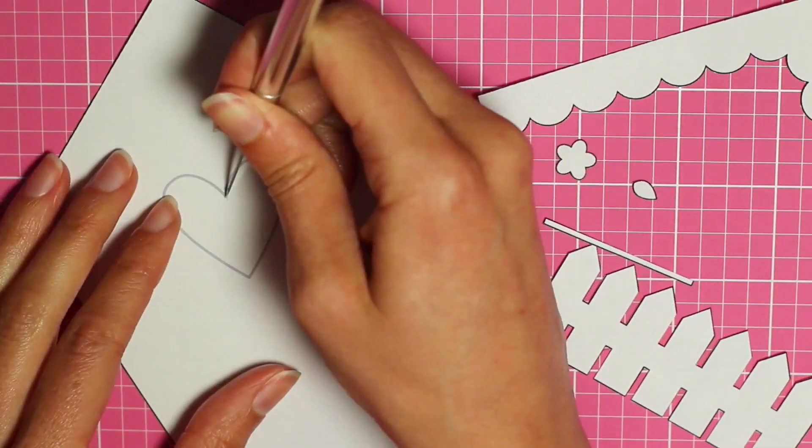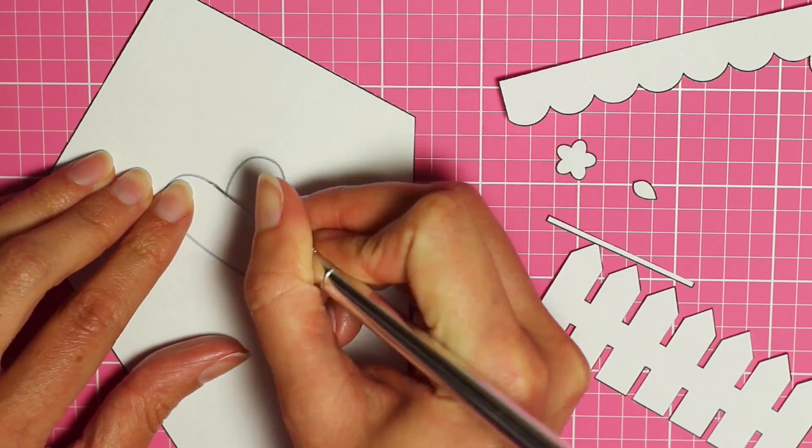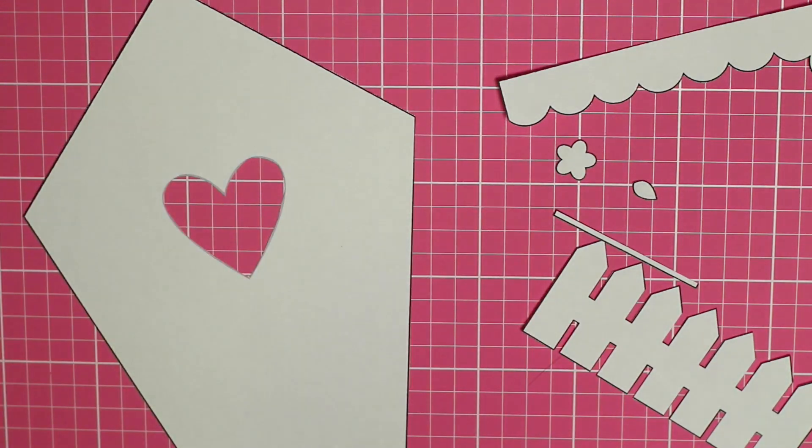An exacto knife works best for this but if you don't have one you can try using some scissors with a sharp point and just go ahead and cut the heart out. So it looks like this.